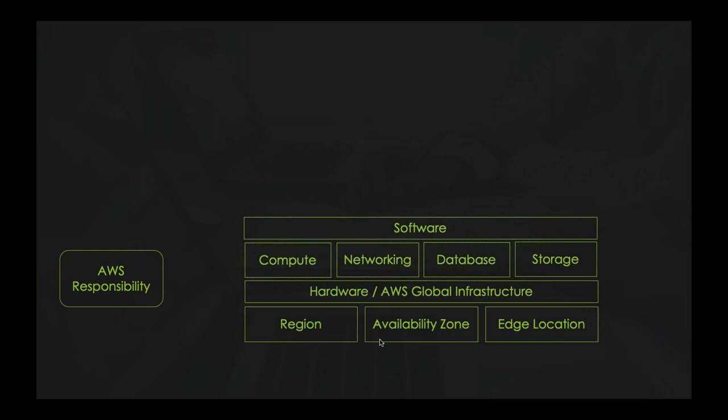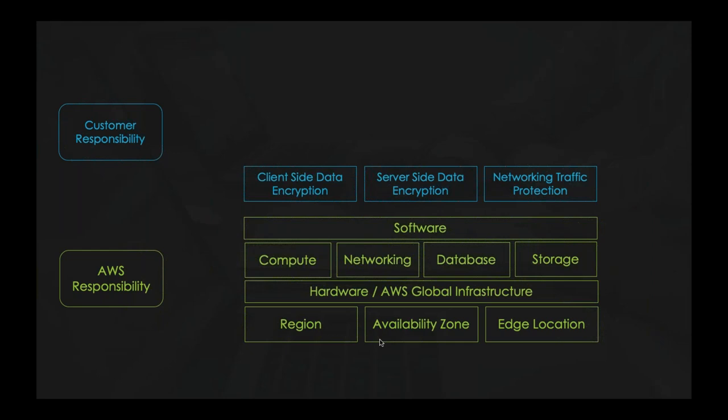As a customer of AWS, you are responsible for encryption of data — both client-side and server-side encryption — and networking traffic protection, including access control lists that define who can access your data and your AWS account. You are also responsible for maintaining and managing the operating system, network, and firewall. In AWS, the firewall equivalent is called a security group, and it is your responsibility to maintain it.